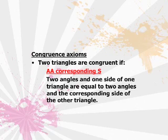And finally there was the case of angle-angle-corresponding side. We said that two triangles are congruent if two angles and one side of one triangle are equal to two angles and the corresponding side of the other triangle.